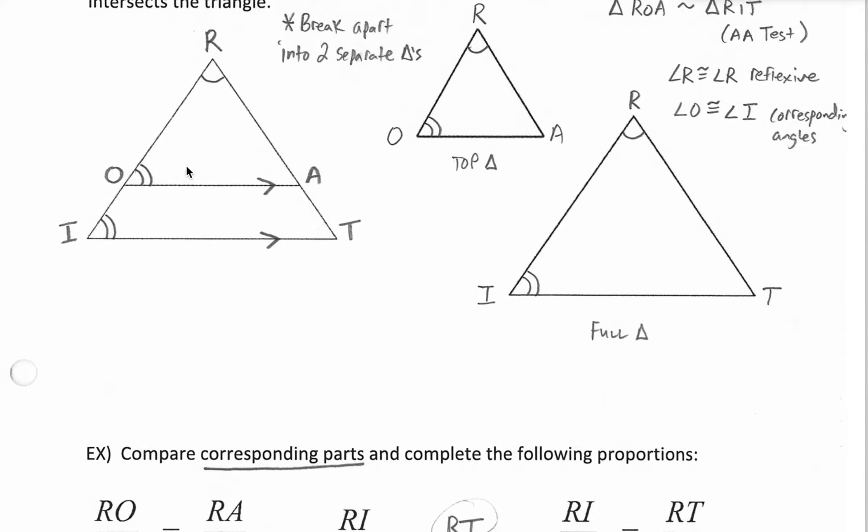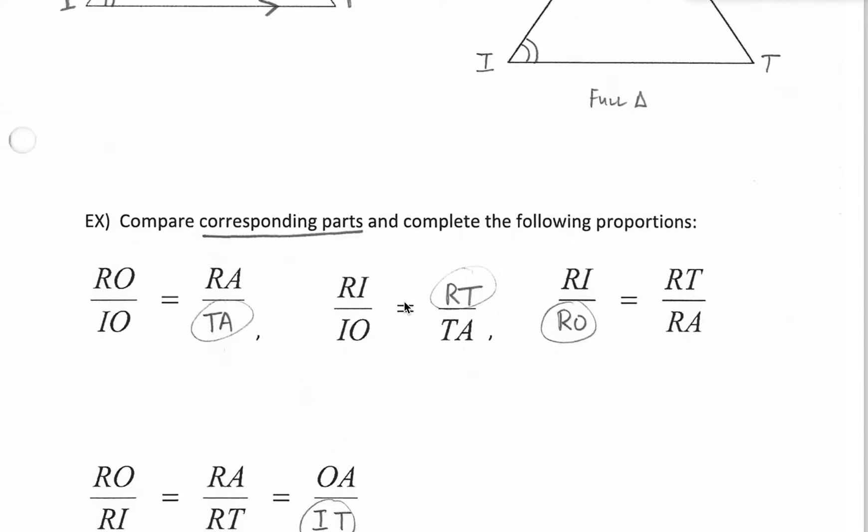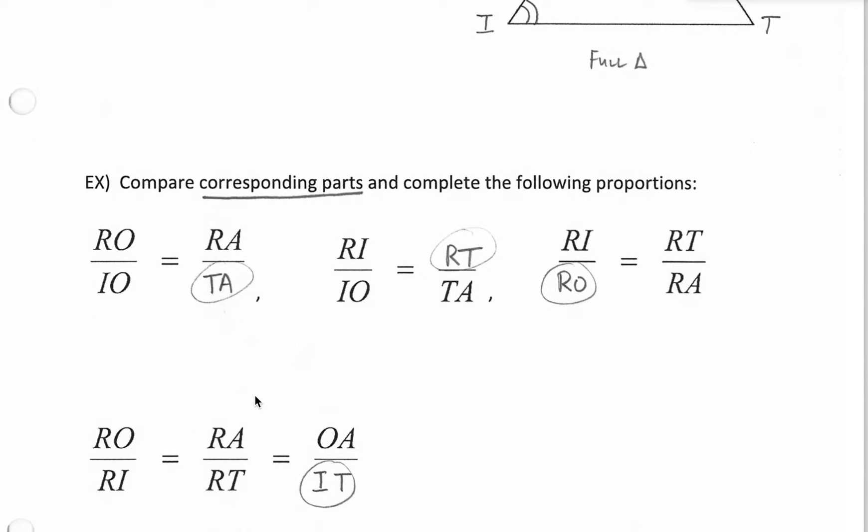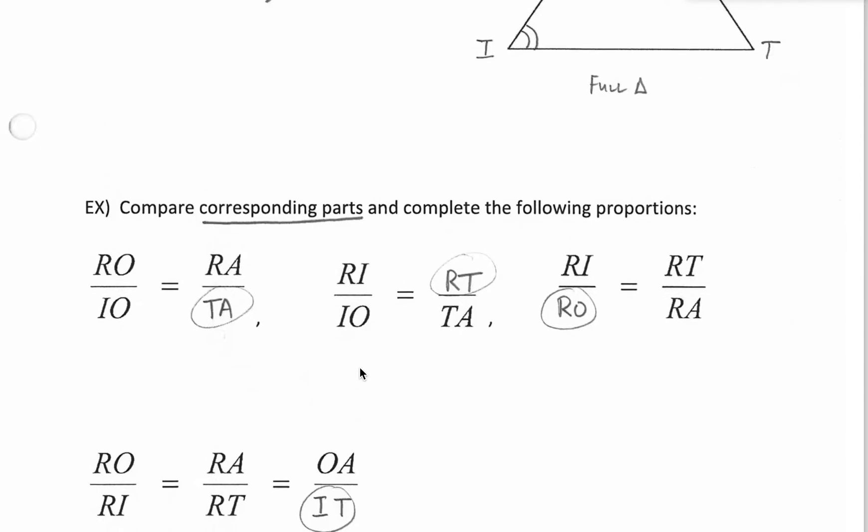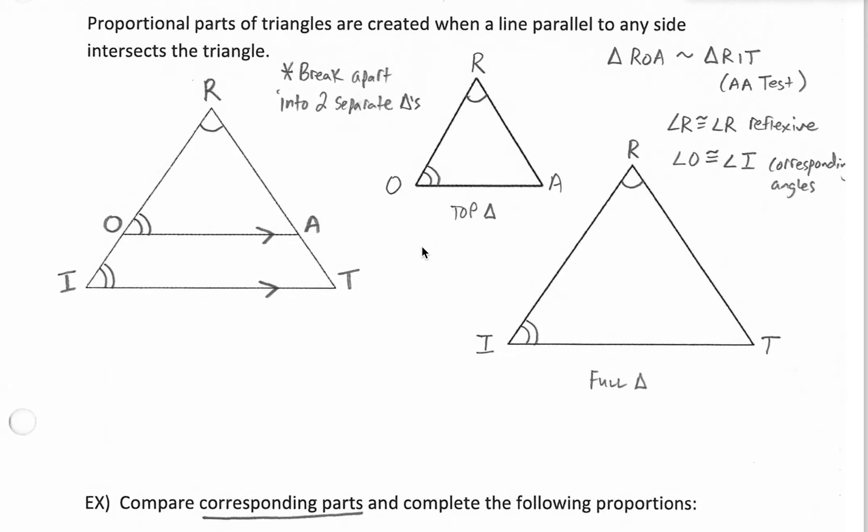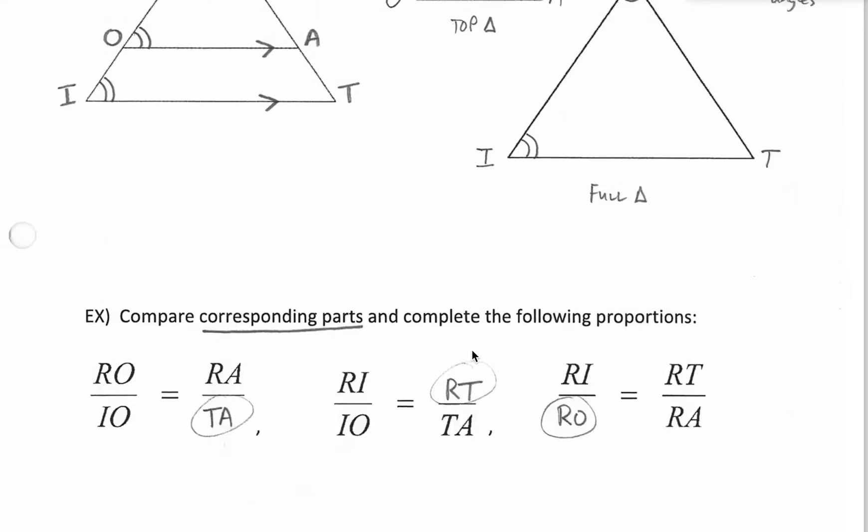So triangles inside another triangle with one of the sides being parallel, you can compare corresponding pieces that way. If you break it apart, that allows us to easily see one more comparison here. So RO to RI would be the left sides here if we took them apart. RA to RT would be the right sides. So that must be equal to just comparing the bottom pieces, OA to IT.